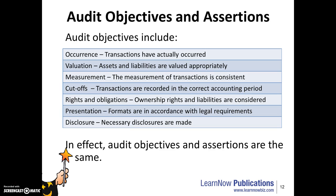Further objectives include: Occurrence — where transactions have actually occurred. Valuation — assets and liabilities are valued appropriately. Measurement — the measurement of transactions is consistent. Cut-offs — transactions are recorded in the correct accounting period. Rights and obligations — ownership rights and liabilities are considered. Presentation — formats are in accordance with legal requirements. And Disclosure — necessary disclosures are made. Again, these objectives and assertions are the same.